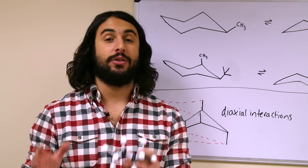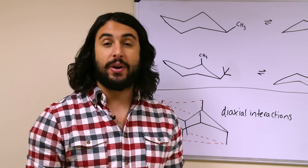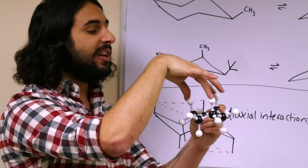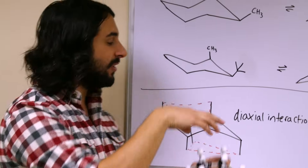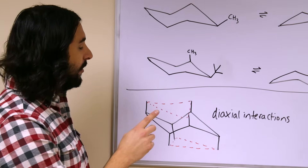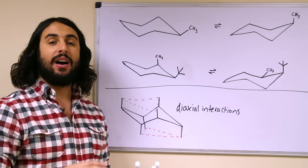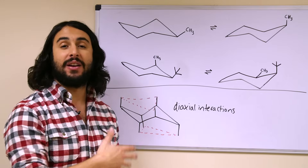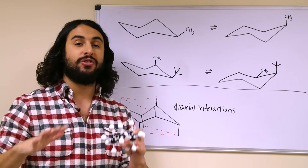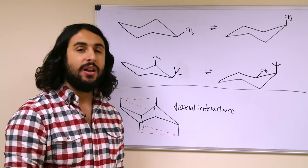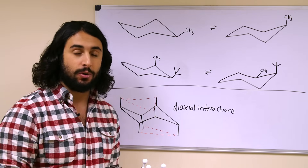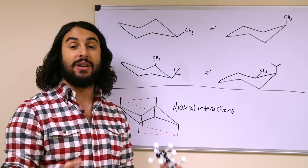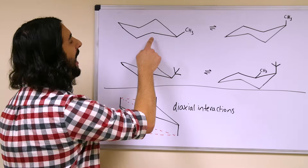Now that we know each chair has axial and equatorial substituents, we need to understand the energetic discrepancy between these positions. Groups in the axial positions have an opportunity to create more steric hindrance than groups in the equatorial positions, because groups in the equatorial positions are anti with respect to the rest of the ring. So the equatorial position is the lower energy position and the axial position is the higher energy position. If we look at a substituted cyclohexane, one of the chairs may be at a lower energy than the other.